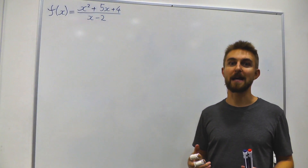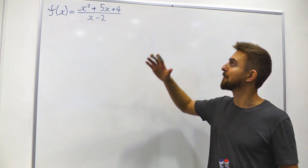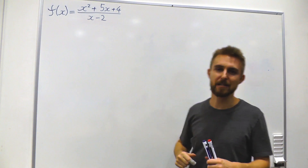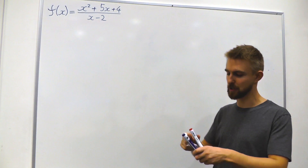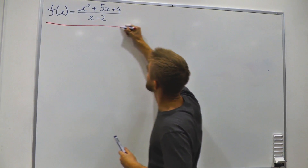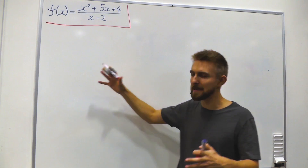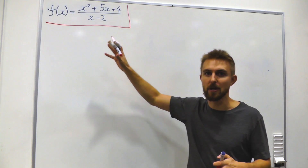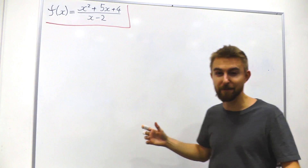In this session we're going to do a quick refresher on curve sketching, running through the example of this function: x squared plus 5x plus 4, all divided by x minus 2. We're going to build a list — a kind of treasure chest — of key pieces of information, little golden nuggets about this function, that will eventually allow us to sketch the whole thing at the end.